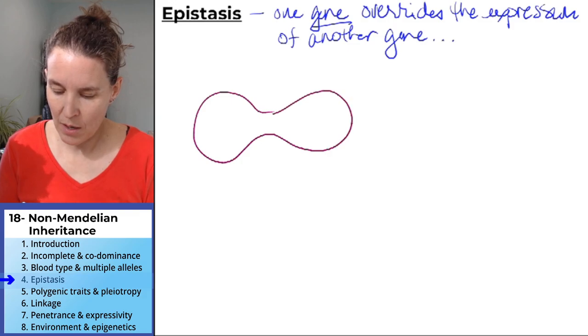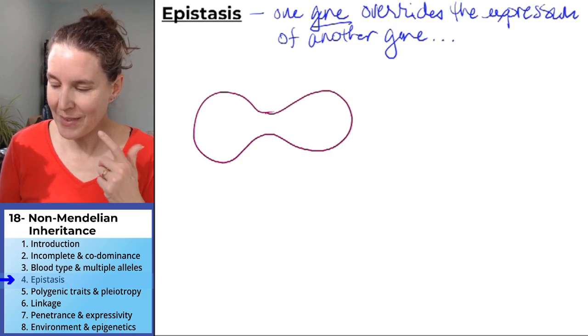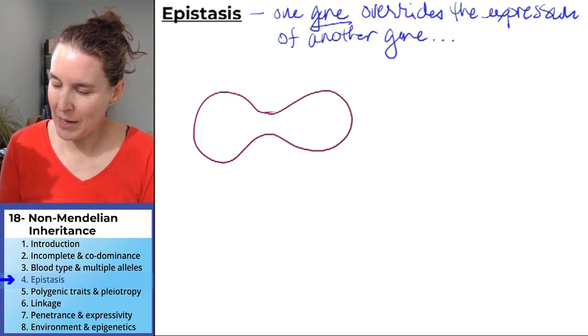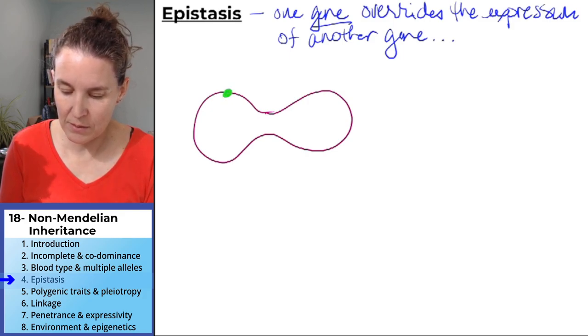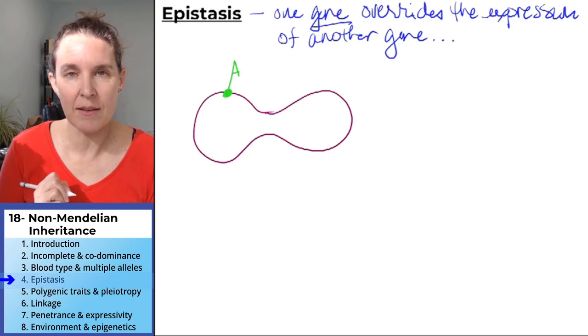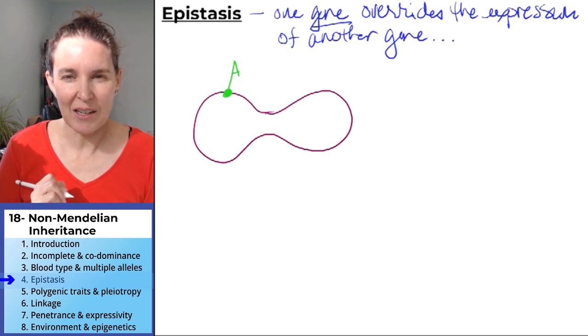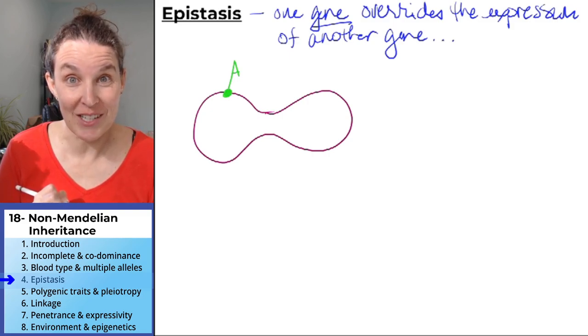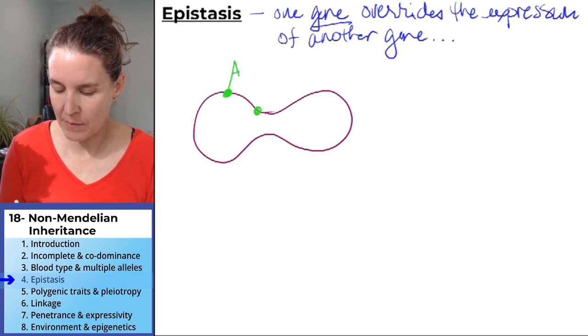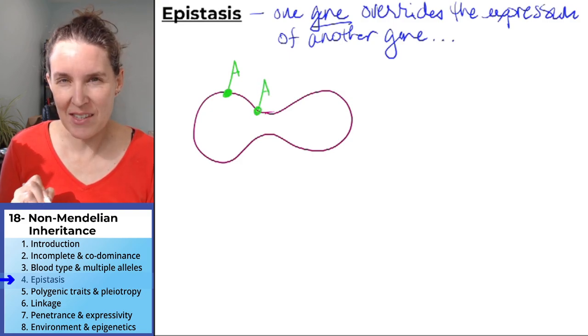In our example with blood types, we drew the red blood cell and I don't know if you noticed, but I drew a little dot and then I embedded the antigen into the red blood cell at the dot.